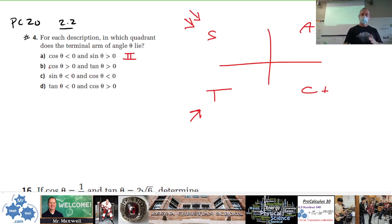And identify which quadrant the terminal arm would lie. For b, cos is positive, so it could be either this one or this one as well. Tan is positive. So here tan is negative, so it's got to be here, quadrant one for b.